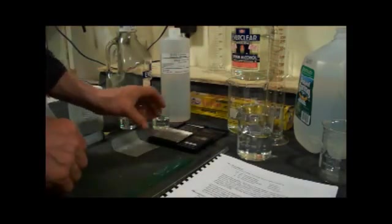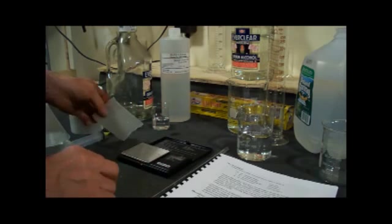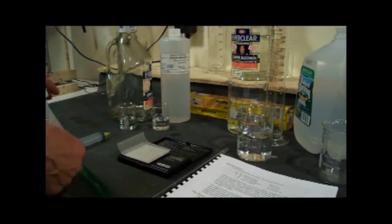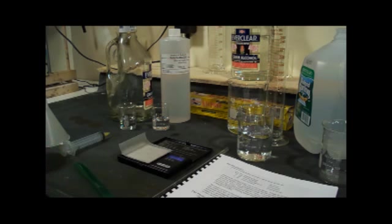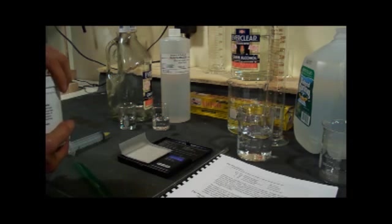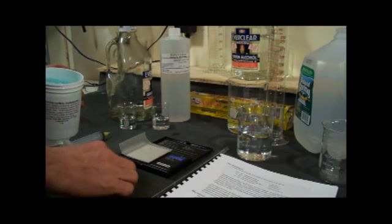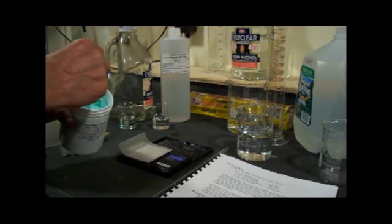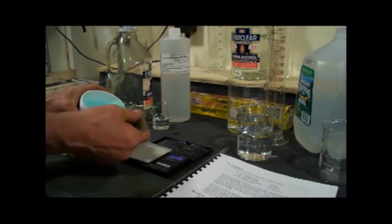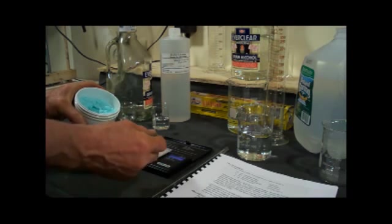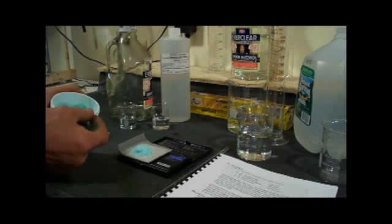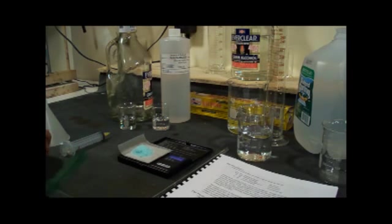And then we're going to weigh out the ferrous sulfate that we need. I'm going to begin by putting the wax paper on the pan and then we'll turn the scale on. When the scale comes up it should read zero, so it's already accounted for the weight of the waxed paper. We're looking for 7.5 grams of the ferrous sulfate, so we'll scoop up some - that's 3.8, 7.48, and that's close enough. Again, if you're within about 5% you're pretty good.